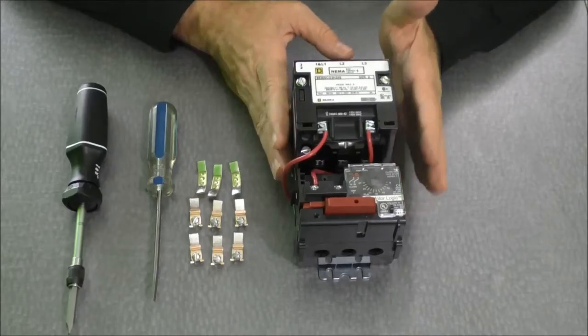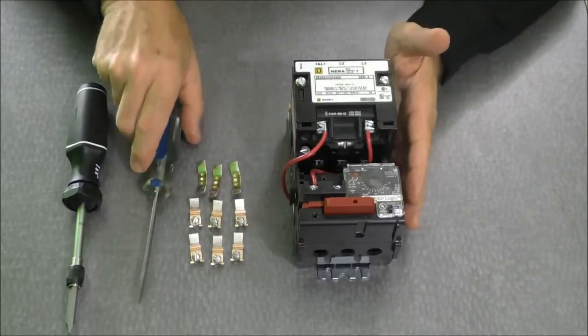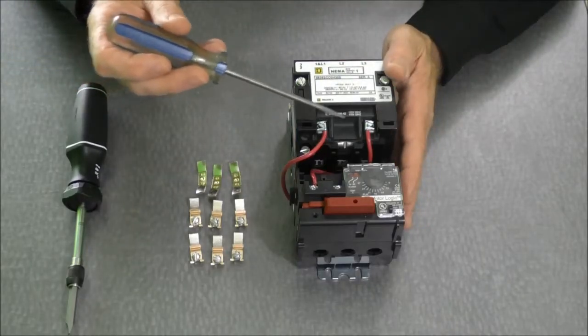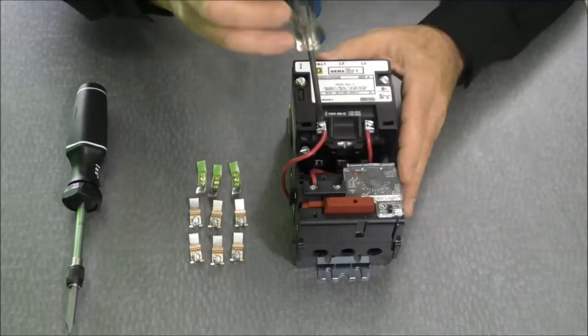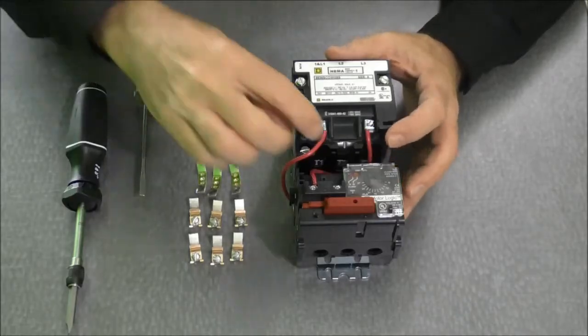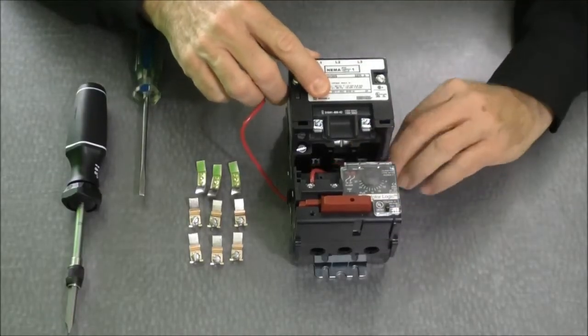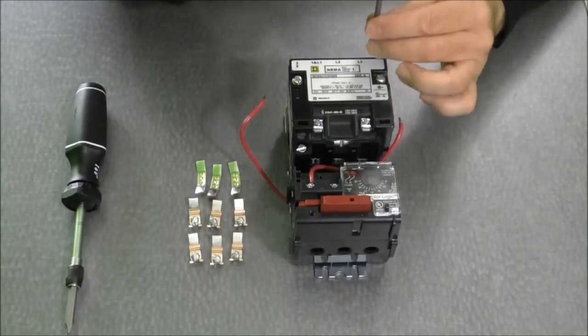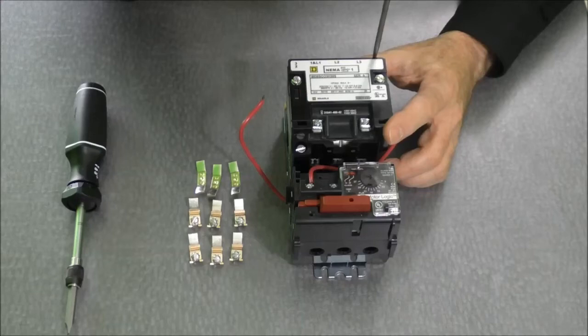So to begin with, to get access to the contacts, the easiest thing to do is remove the wires to the terminals on the coil. So I'm going to remove both the A1 and the A2 wires. I'm going to pull those to the side so that I can loosen the screws to the contact itself.